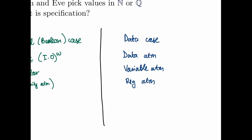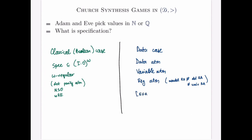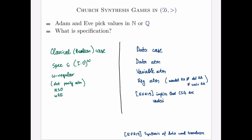For the case of register automata, non-deterministic register automata are not equivalent to deterministic register automata, nor are they equivalent to universal register automata. Previous research implies that Church Synthesis games are undecidable for specifications given as non-deterministic register automata. For that reason, in this paper we focus on the case of deterministic register automata.